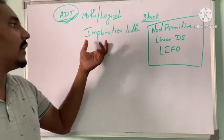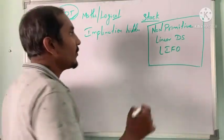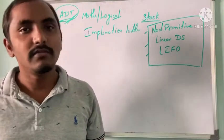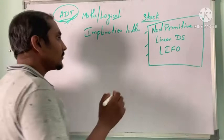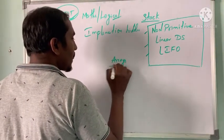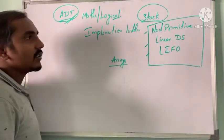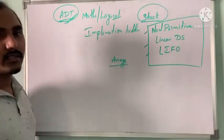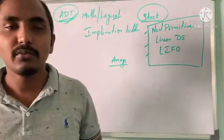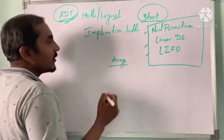The example given is stack — which is a non-primitive linear data structure working in the form of Last In First Out. Stack can be implemented using different methods: I can use static arrays, I can use dynamic arrays, or different types of methods for implementing stack. If I take array-based stack implementation as an example, I can use various approaches.